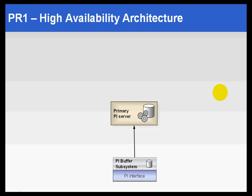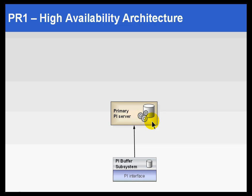High availability isn't a piece of software — it's a goal. We're trying to make sure that the PI Server is always available. It's highly available. The way we implement that right now is through PI Server version PR1, the Platform Release 1. Imagine you've got a single PI System with a PI Interface that's sending data to the primary PI Server.